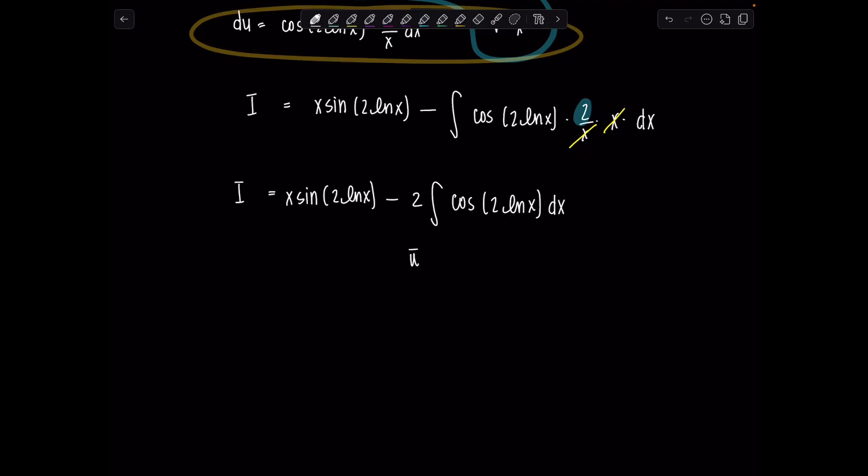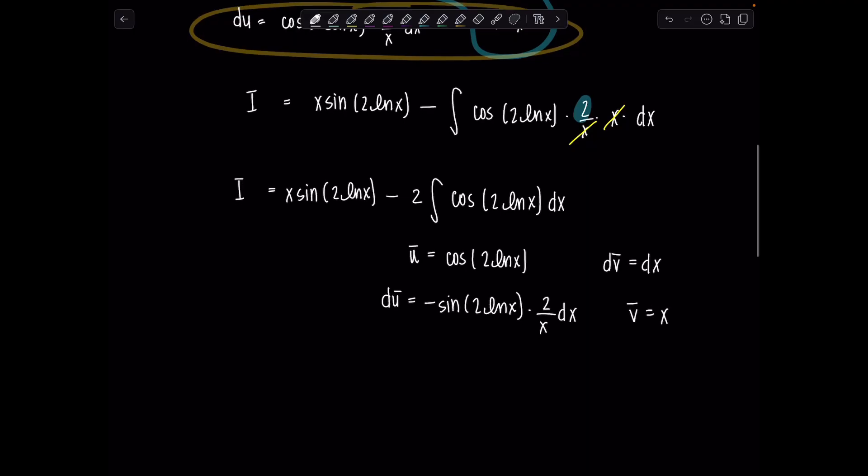So round two, we got to call it something else. So u bar, we already used up u, is cosine of 2 ln of x, and then dv bar is going to be dx. So then du bar, derivative of cosine something is negative sine the something, and then the derivative of 2 ln x is 2 over x dx, and then v bar is just going to be x. Perfect.